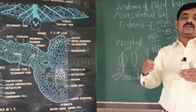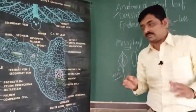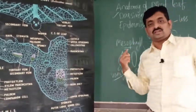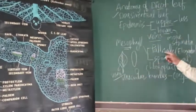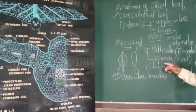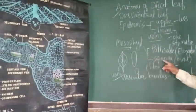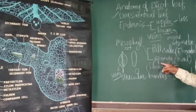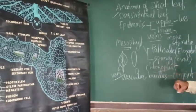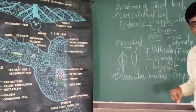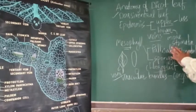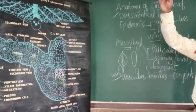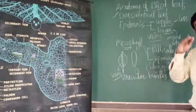The tissue between upper and lower epidermis is called mesophyll. This mesophyll tissue is classified into two types: palisade cells and spongy cells. Palisade cells are elongated and present on the upper side; spongy cells are oval and present on the lower side. Both are modified parenchyma cells containing chloroplasts with chlorophyll, making them green-colored.